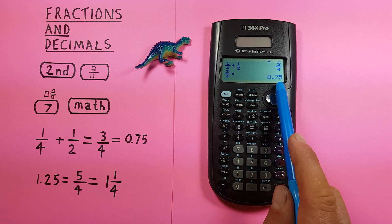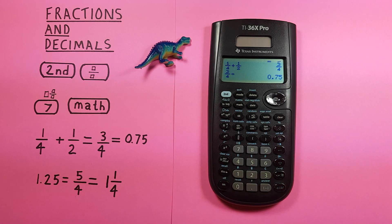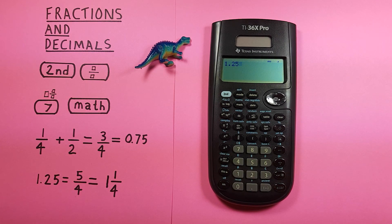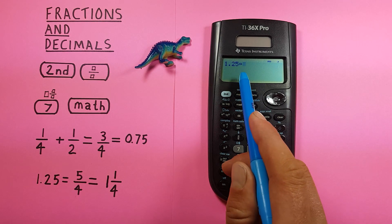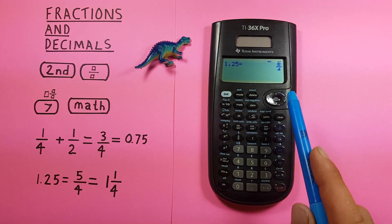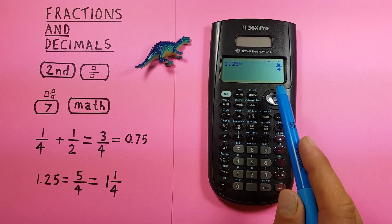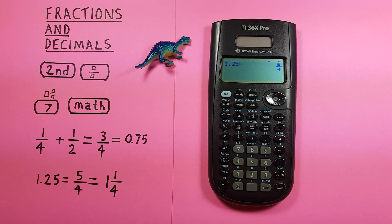To convert decimals to fractions, let's say we have 1.25. Just enter 1.25 on your calculator, then press that same key with the arrows going left and right. Press enter and it converts to 5/4, the improper fraction equivalent.